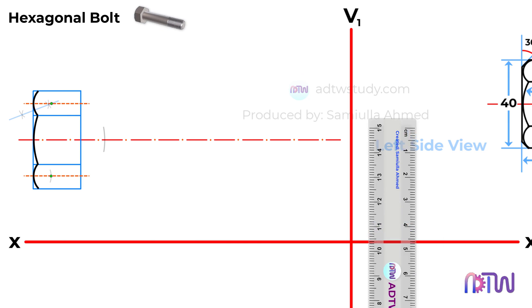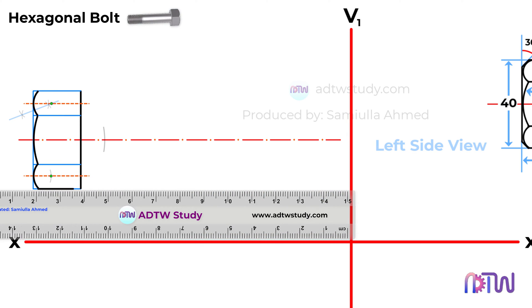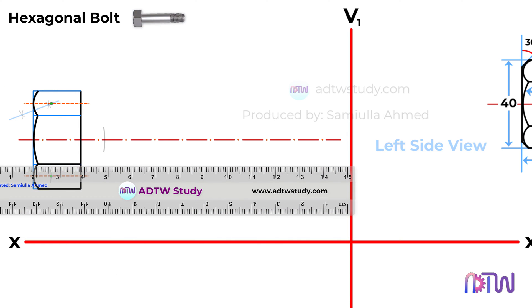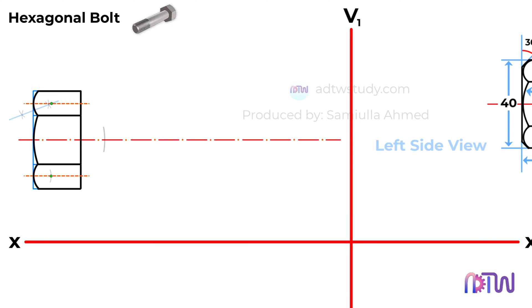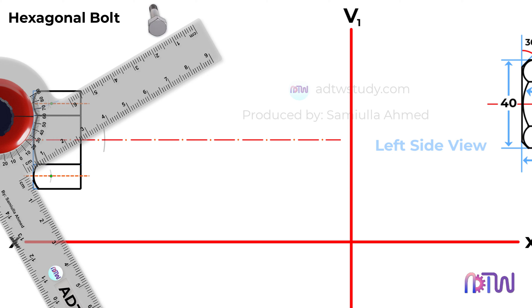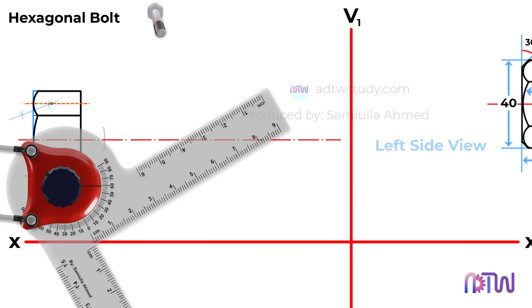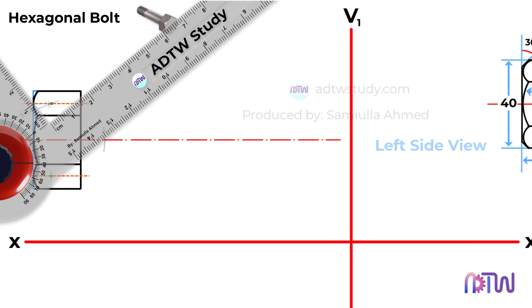After this step, we will proceed to darken the necessary lines. Following this, let's proceed to draw the chamfers of the nut. The chamfer angle is set at 30 degrees. Given that the bolt is positioned horizontally, adjust the drafter to a 60 degree angle and draw the chamfers accordingly.